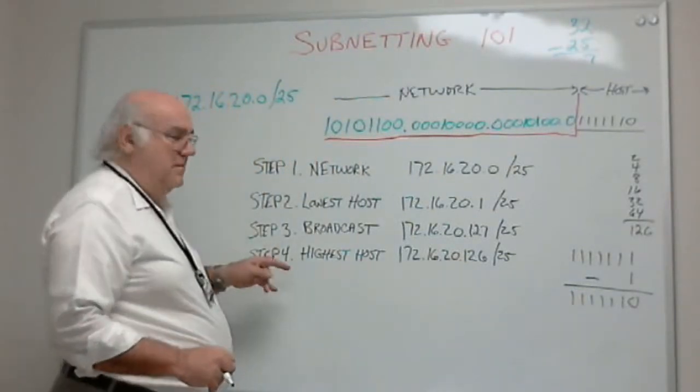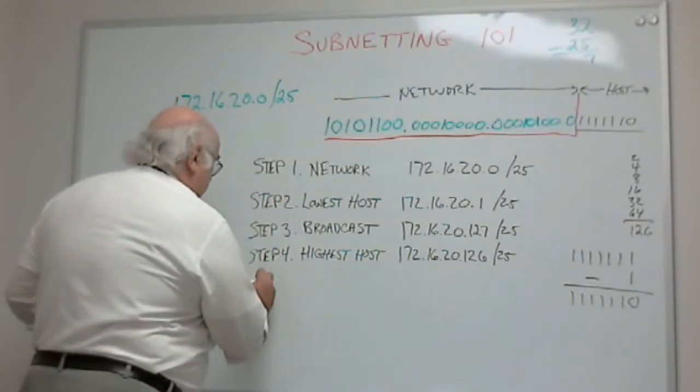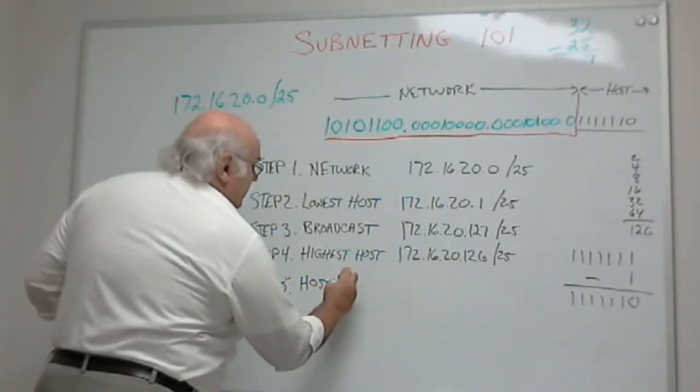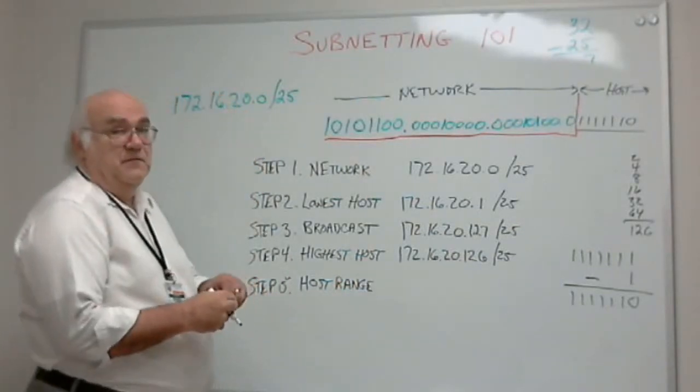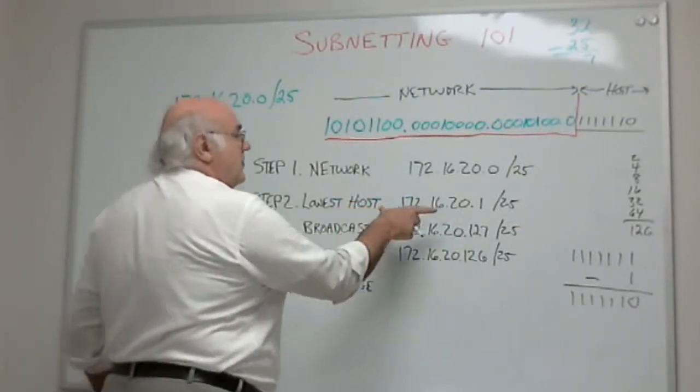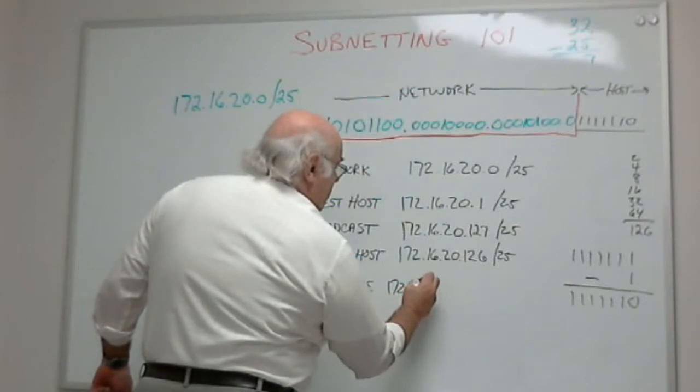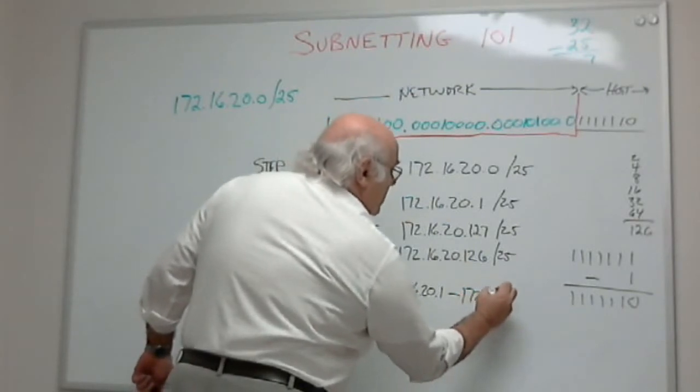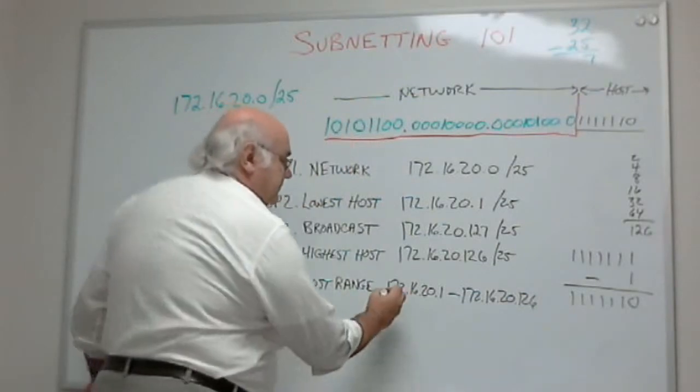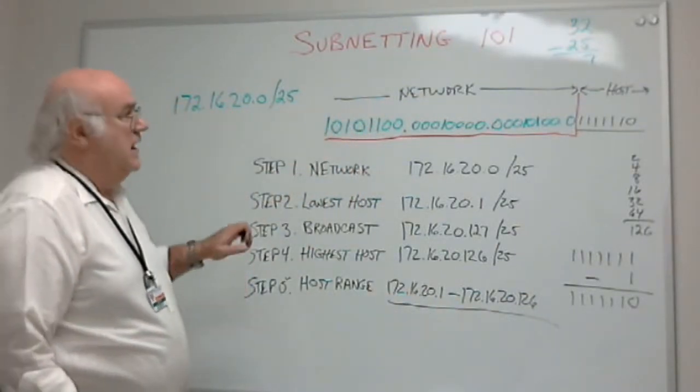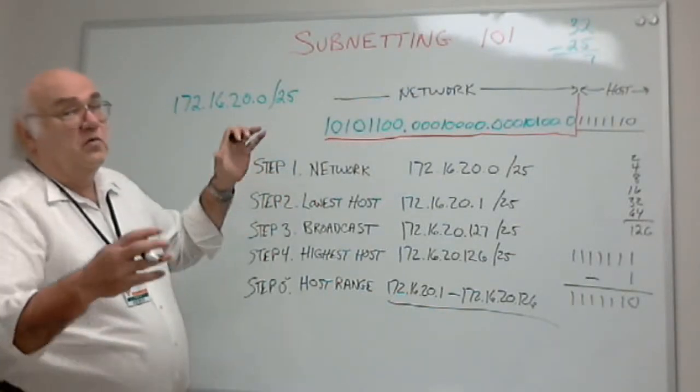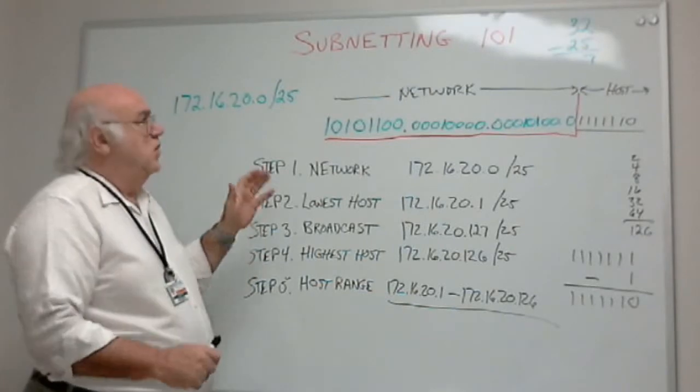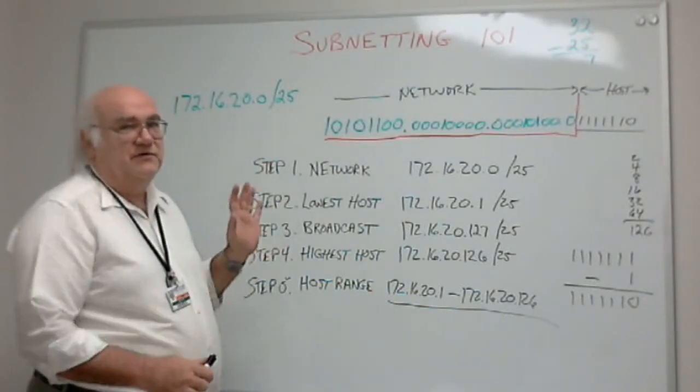Once I have my network, my lowest host, my highest host, and my broadcast address, I can now, in step 5, show what the host range is. This is the range of addresses I can use for my hosts. Obviously, it will be from the lowest to the highest. So my host range is 172.16.20.1 through 172.16.20.126. And that is how we calculate the addresses we are going to use. This you need to get under your belt before we get into subnetting, which we are going to do in the very next lecture. We are going to start our subnetting lectures, Subnetting 101. Understand, calculating addresses is very important.